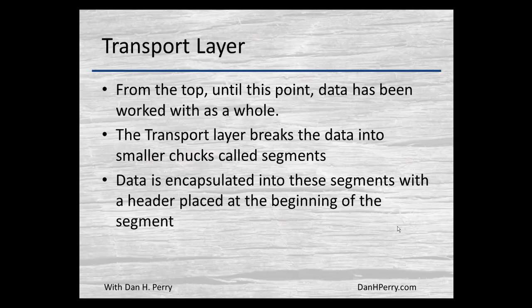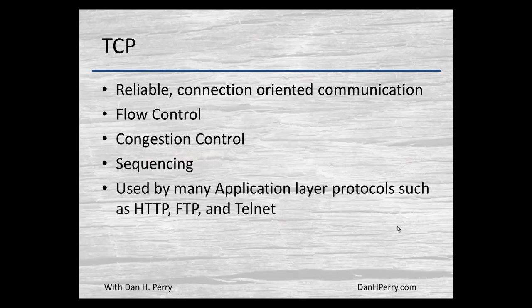That header will have information to help get the segment reassembled at the other end and routed to the proper application. TCP is a reliable, connection-oriented communications protocol. Reliable means we can tell once the communication session has started if any data is lost or missing. It has error checking to ensure data is received reliably, and if anything is missing it can retransmit. It also has flow control to manage how quickly data is transmitted, and congestion control.